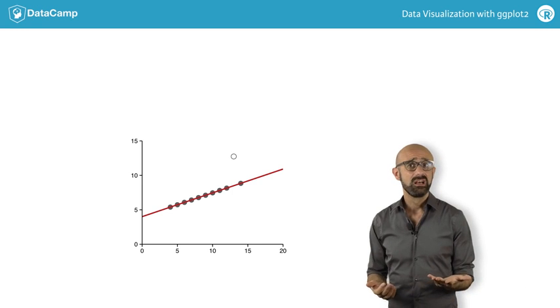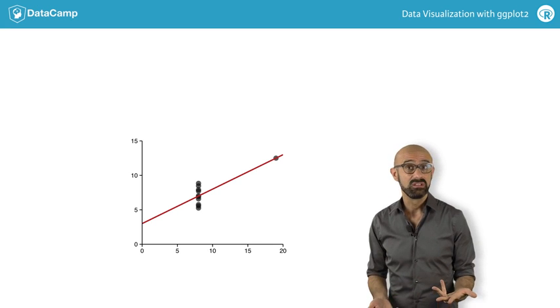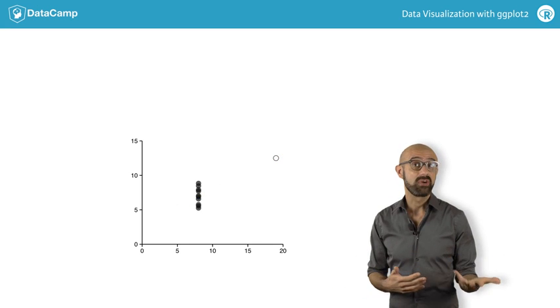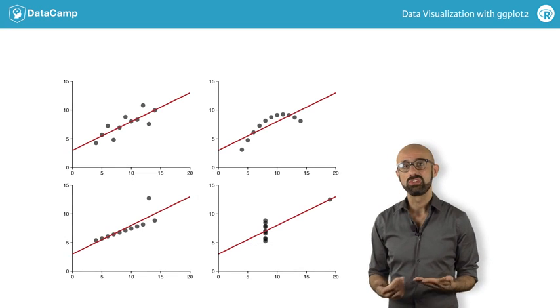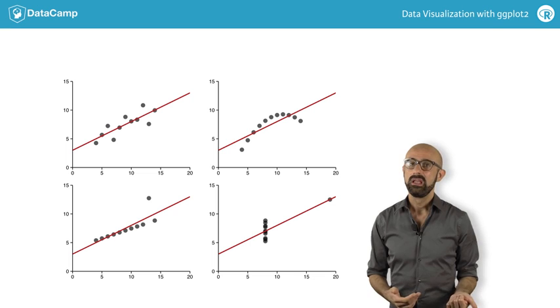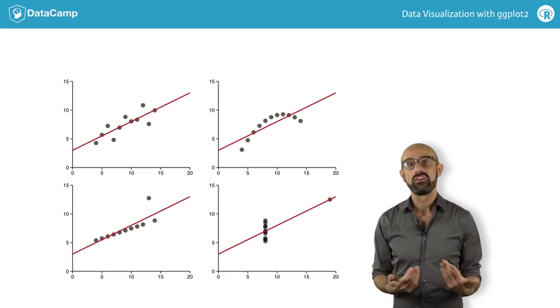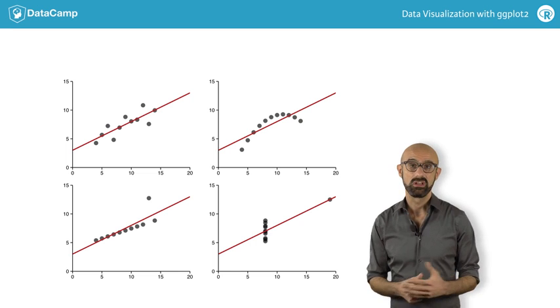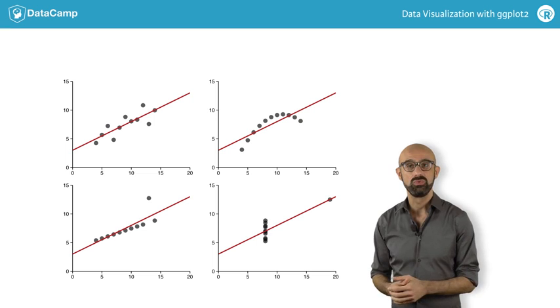And sometimes, the model may be describing a relationship where, in fact, there is none at all, because of some obscure extreme value, which may very well be false. Here, four different datasets are described by the same linear model. If we relied solely on the numerical output without plotting our data, we'd have missed distinct and interesting underlying trends. These examples should give you an idea of what we set out to do with visualizations.